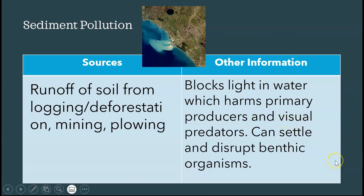Sediments can block light in the water, which harms producers — they can't photosynthesize, lowering overall productivity and reducing species at the bottom of the food web. It can harm visual predators who can't see their prey through the muddy water. As sediments settle, they can also cover or disturb food sources for benthic (bottom-dwelling) organisms.